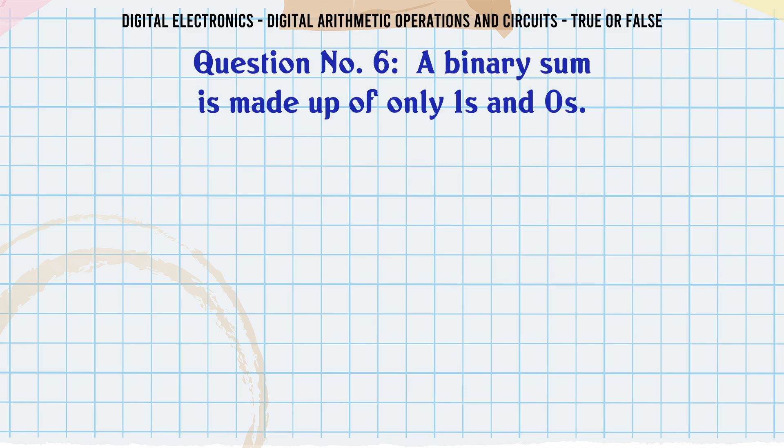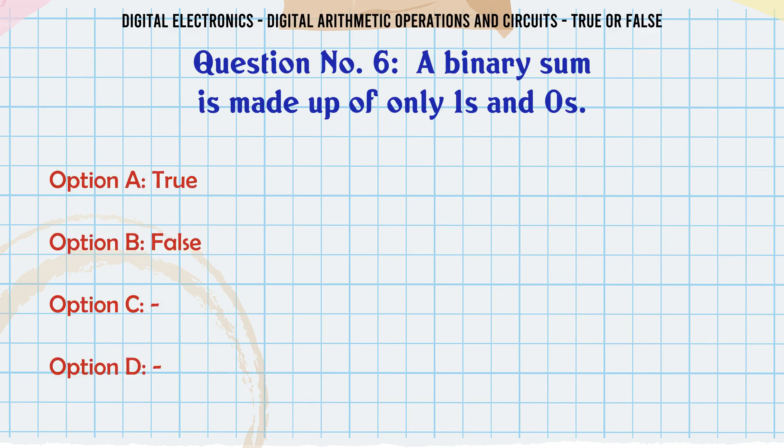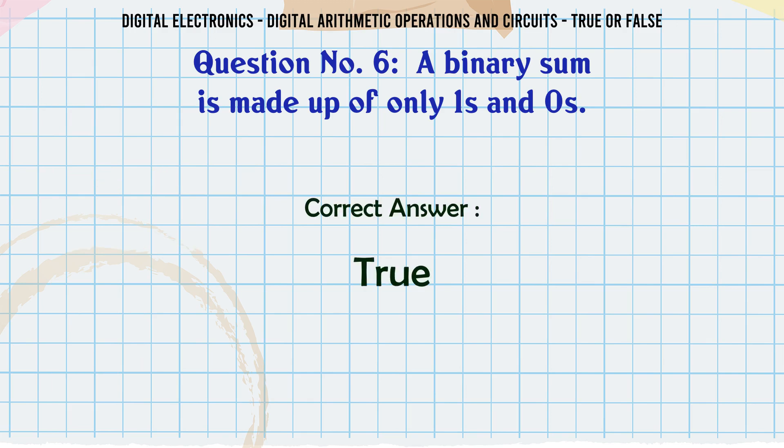A binary sum is made up of only 1s and 0s. True or False? The correct answer is True.